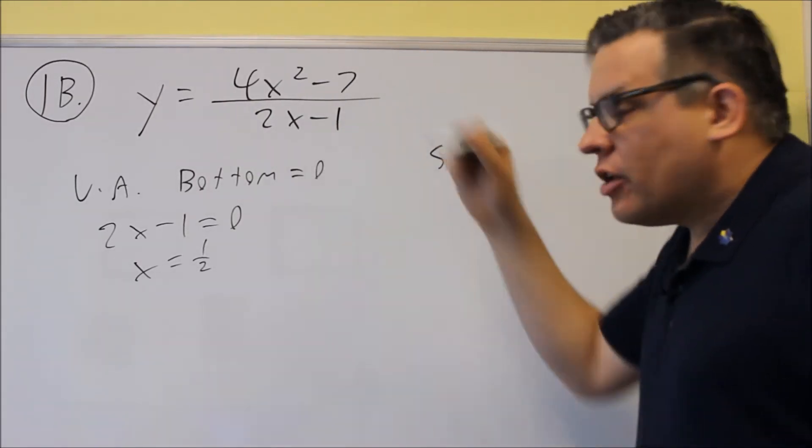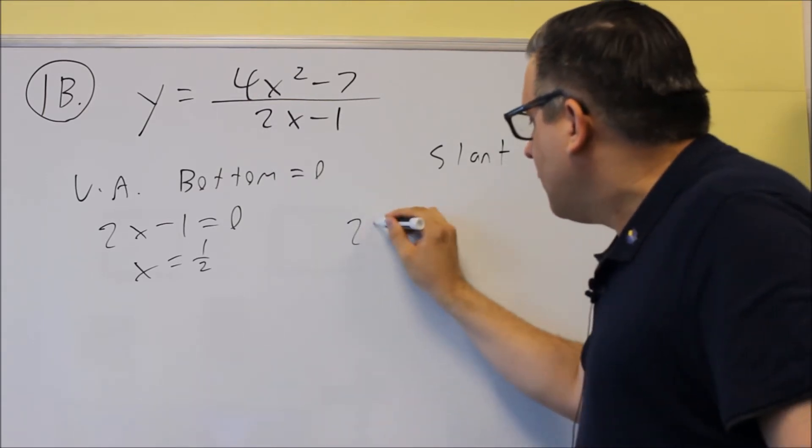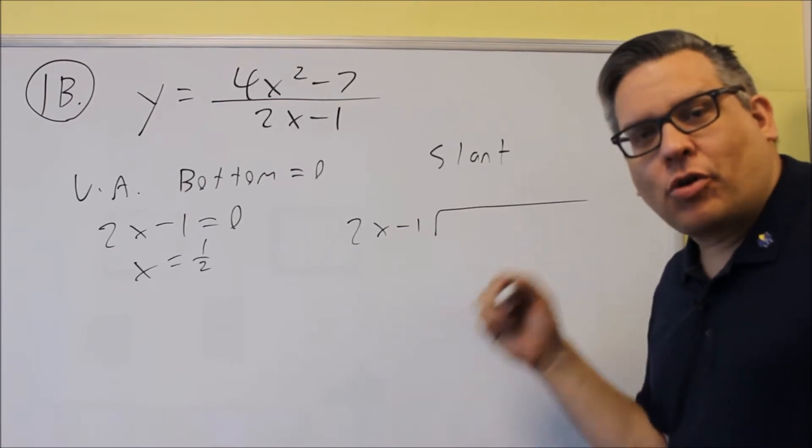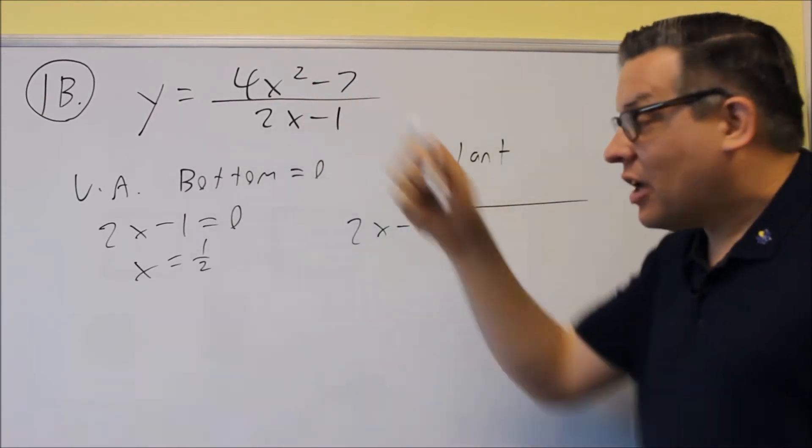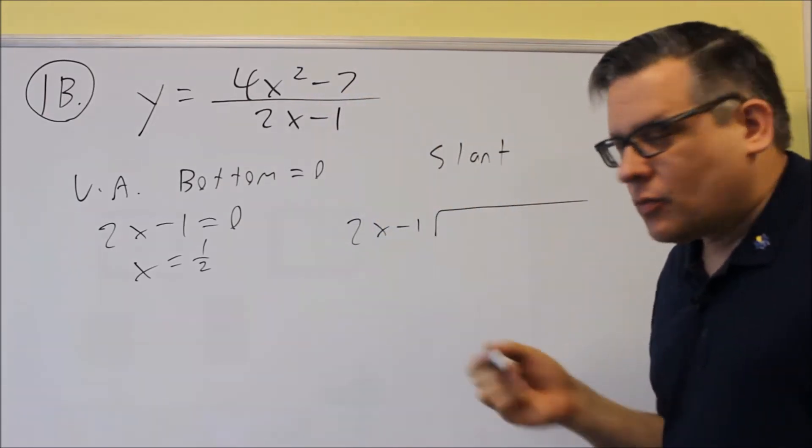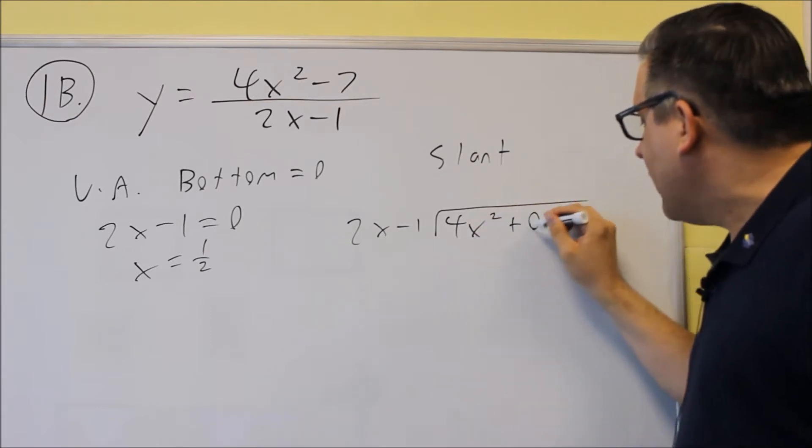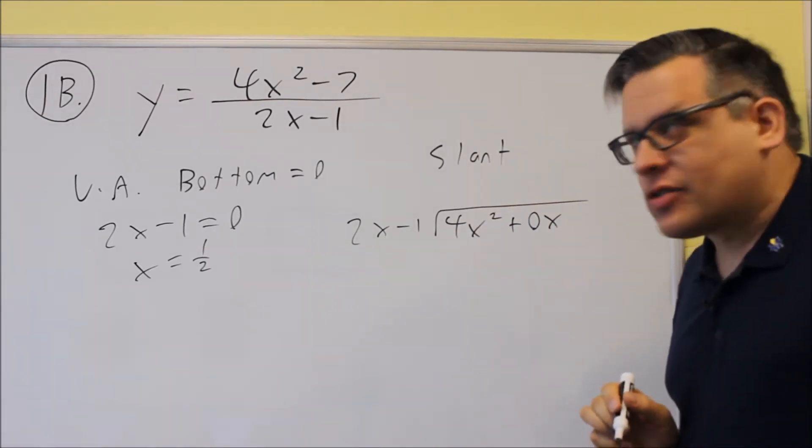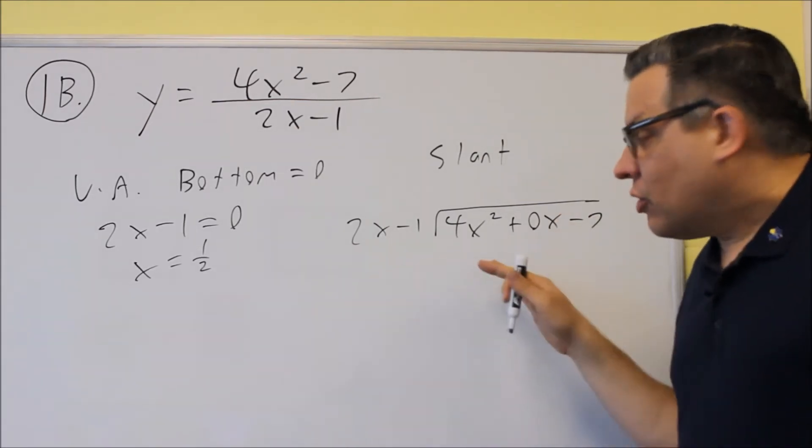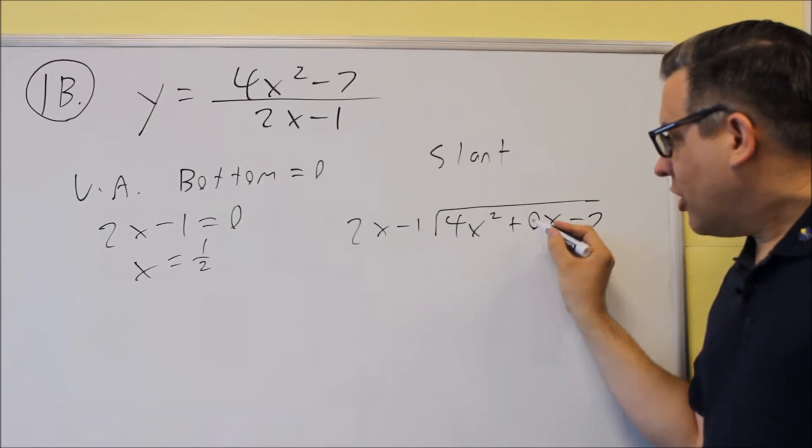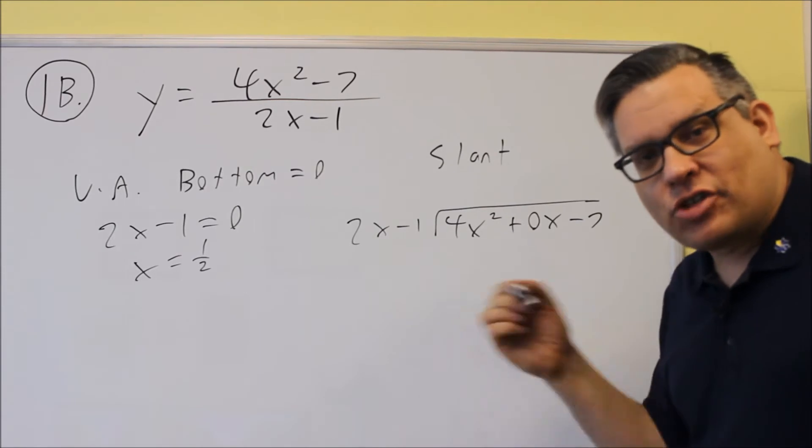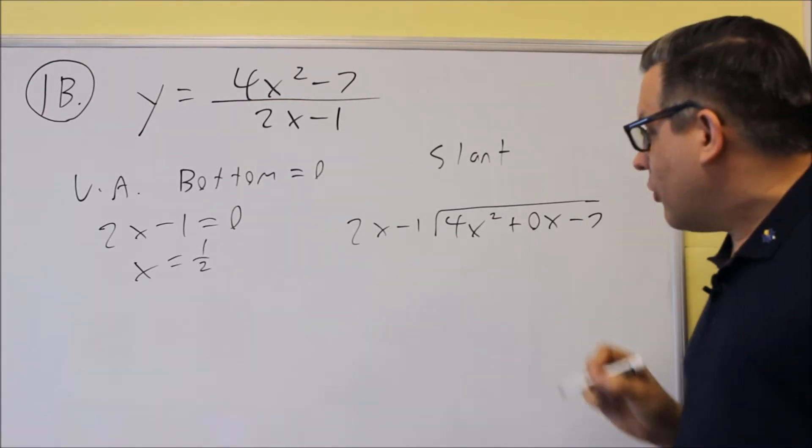For the slant, we've got to do that long division again. Now I mentioned this in the first question, that if you have a power that's missing, you've got to put in a 0 placeholder. That's going to be the case for this problem right here, because notice there's no x term there. So when I write this, I need to put in a 0x term. This just ensures that you're subtracting the right things when you do the long division process. We're putting a 0 in there. It could be plus or minus, it doesn't matter, because adding or subtracting 0 doesn't change anything.